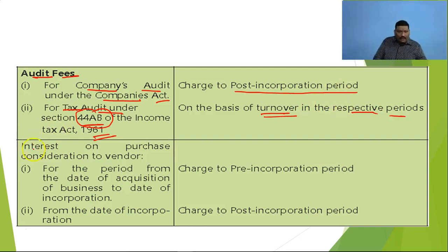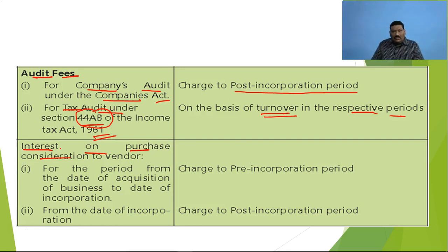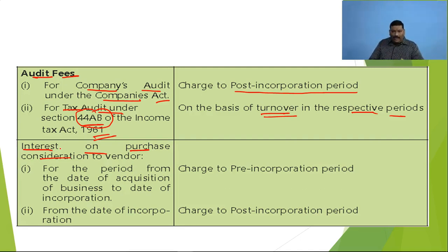One important point also: interest on purchase consideration. What is purchase consideration? When the company is taking over the partnership firm, they have to pay the owner of the partnership firm some amount of purchase consideration — whether in the form of shares, debentures, or cash — it is called purchase consideration. If the company is clearing the amount on the incorporation date, there will be no interest on that amount. All interest, if any, will be charged to the pre-incorporation period. And if the date of settlement of that payment falls in the post period, not on the date of incorporation, then interest for the further period will be charged to the post-incorporation period.